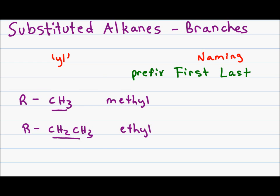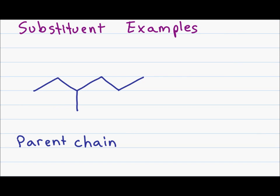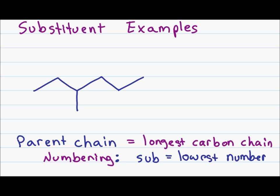Let's look at some examples. Looking at this example, we first have to identify the parent chain. A parent chain is the longest carbon chain in any molecule, and the substituent is anything that comes off of that parent chain. The second thing to talk about is numbering. When you number your carbon chain, you have to put the numbers so that your substituent gets the lowest possible number.